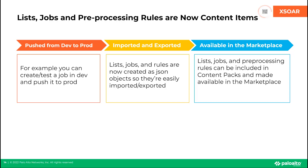This feature allows lists, jobs, and preprocessing rules to now be treated as content items. For example, if one of the use cases depends on a scheduled job, you can build and test that job in dev and then use the dev-to-prod functionality to push it to prod. You can import and export lists, jobs, and preprocessing rules because they're now effectively JSON files. Finally, these content items will be available in the marketplace, so content packs will be able to include and deploy lists, jobs, and preprocessing rules, which should reduce the amount of manual configuration needed.